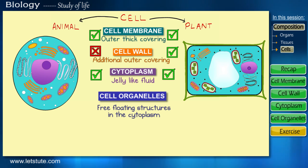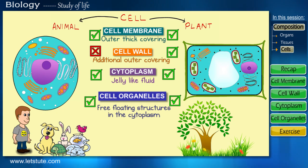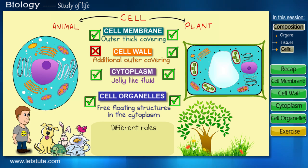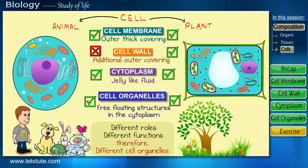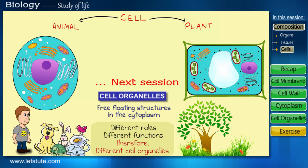As we spoke about two different types of living organisms — plants and animals — both have different roles to perform in the environment, and hence their functions are also different. So accordingly they have different types of cell organelles which help them perform these functions. We'll be learning about these cell organelles in detail in our upcoming sessions.